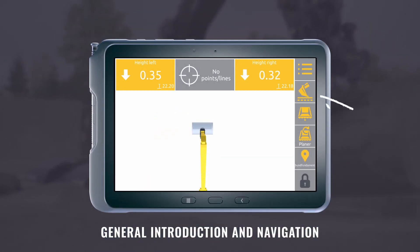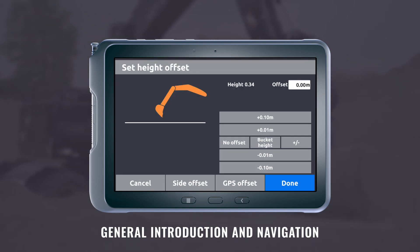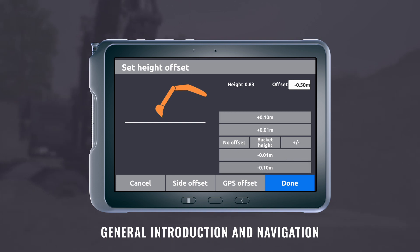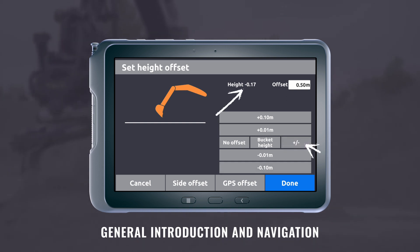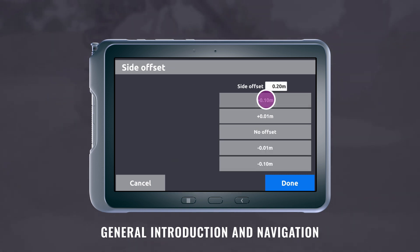The next button is the offset menu. If you press it once, you can adjust the height offset. You can indicate your offset in numbers or adjust it up and down manually. You can switch via this button if the offset should be positive instead of negative or vice versa. You can also adjust the side offset by pressing side offset, and adjust it up and down manually.